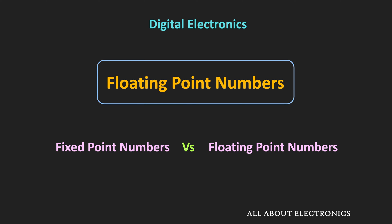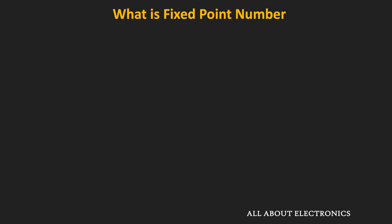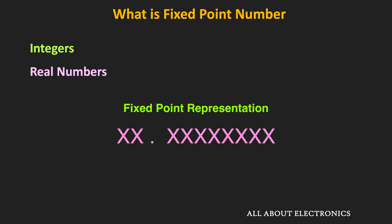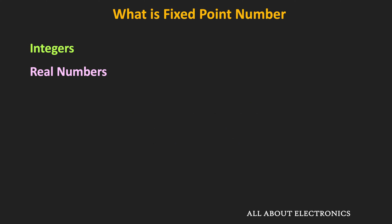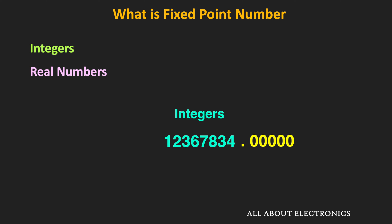First, let us understand what fixed point numbers are. In our day-to-day life, we deal with integers as well as real numbers. When these numbers are represented in fixed point representation, the position of the radix point or the decimal point remains fixed. All integers are examples of fixed point numbers. For integers, there is no fractional part — the fractional part is equal to zero.